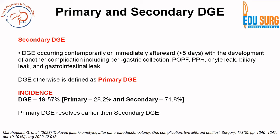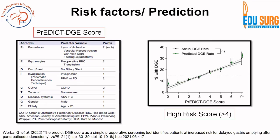Coming to the concept of primary and secondary DGE: primary DGE is less common than secondary DGE. The overall incidence of DGE is 19 to 57%, of which primary DGE accounts for only 28% and secondary DGE for around 72%. Secondary DGE is a consequent event to another complication such as perigastric collection, post-operative pancreatic fistula, hemorrhage, chyle leak, bile leak, or GI leak. Any anastomotic leak or collection in the perigastric region can lead to delayed gastric emptying — this is secondary DGE. If none of these factors are present, it is known as primary DGE.